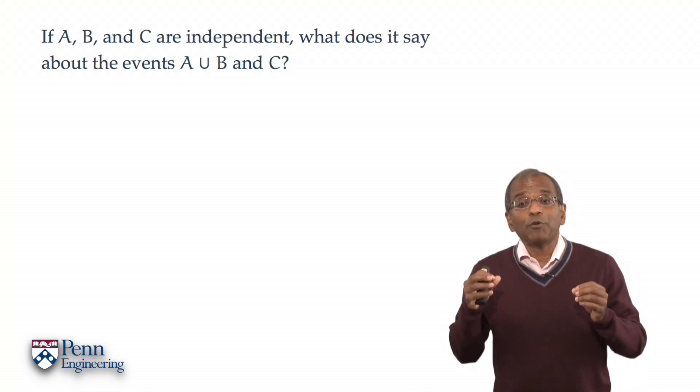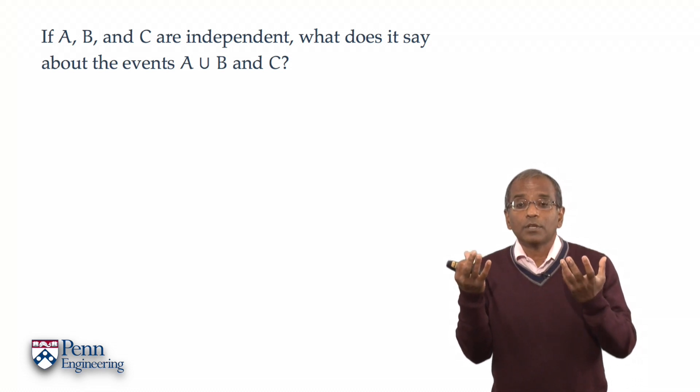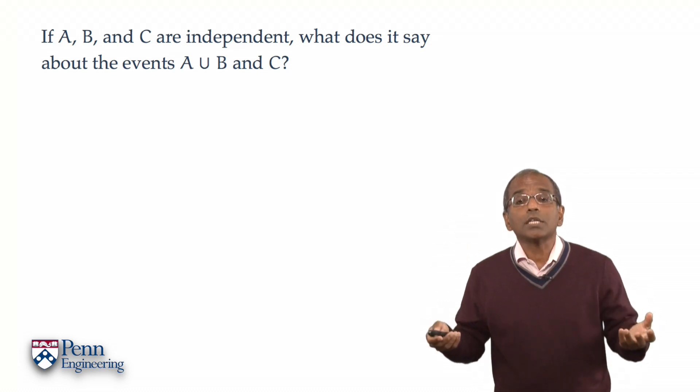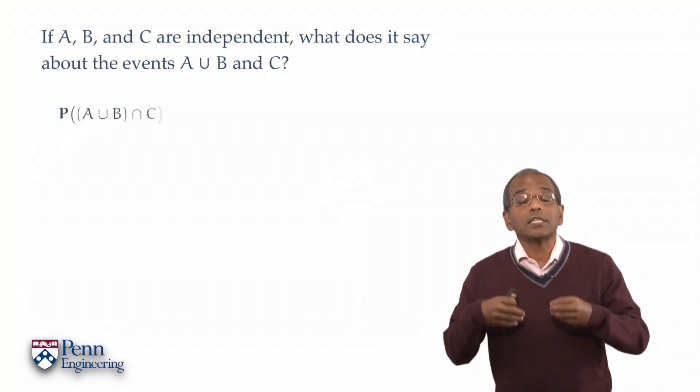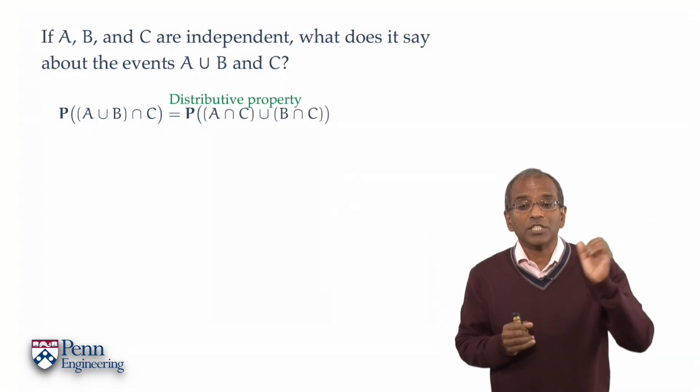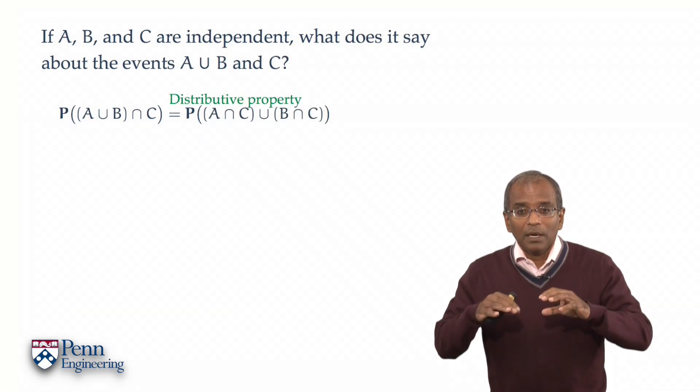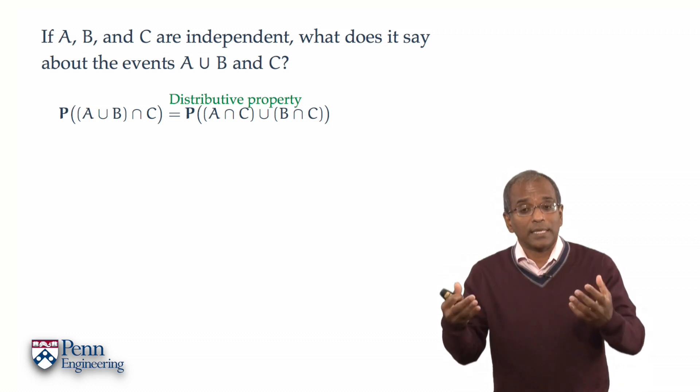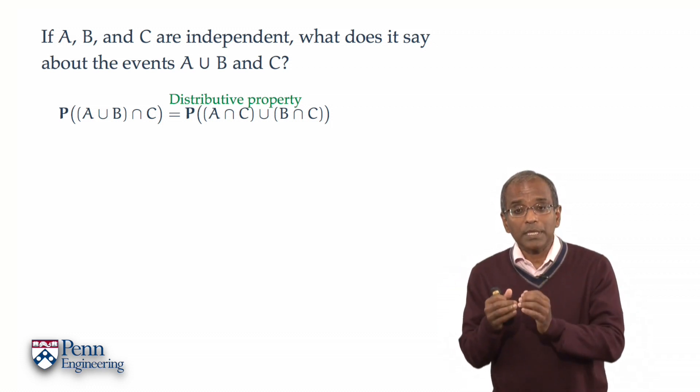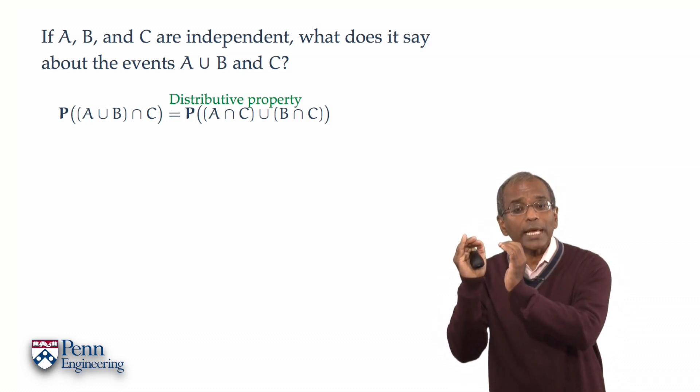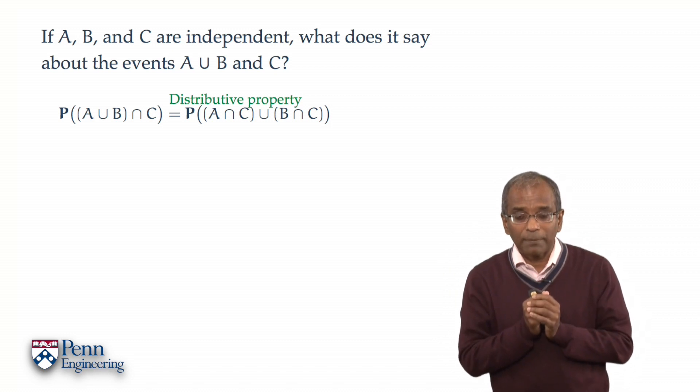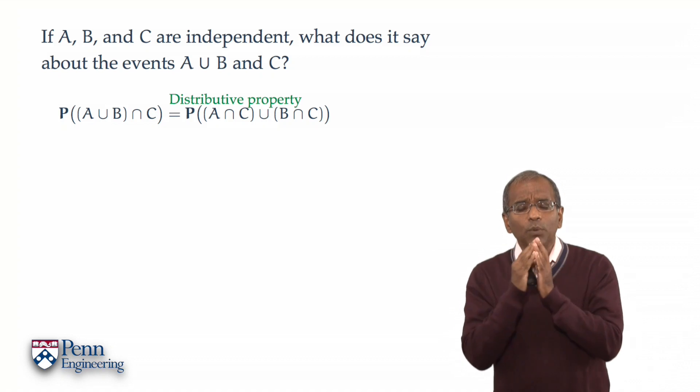So surely if we want to check the truth or falsity of whether A union B is independent of C, we should start immediately by looking at the intersection of the event A union B with C. The distributive property of intersections over unions will allow us to write this as the probability of the union of two sets, A intersection C with B intersection C. So now we have two sets and the union. Can we do something with this?